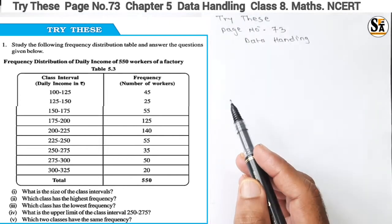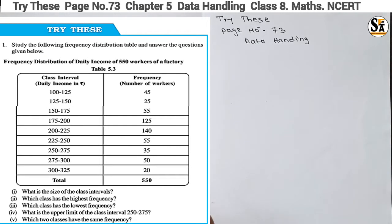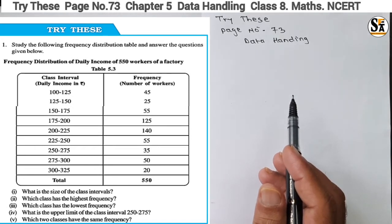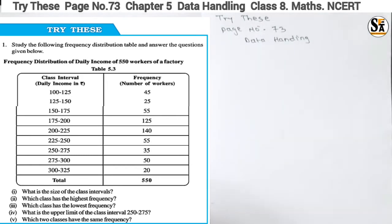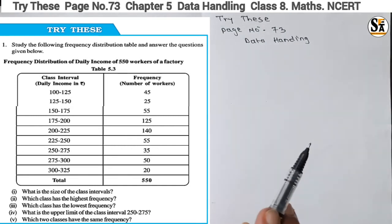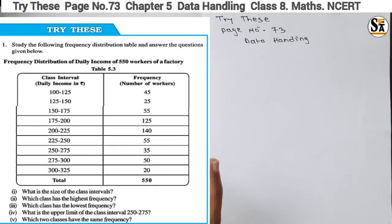The question says: study the following frequency distribution table and answer the questions given below. I have added a photo of the table — you can refer to page number 73 for better clarity. In this frequency table, the class interval of income is given for 550 workers in a factory. As per the class interval, the frequency of workers is given — meaning in which class interval how many workers are there.